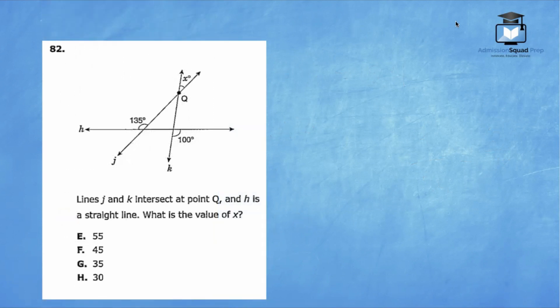For question number 82, you are being tested on angle relationships. Remember, the sum of the angles within a triangle must always add up to 180. Vertical angles are always equal, and any time you have a linear pair, meaning two angles that form a line, they will always be supplementary or add up to 180. Let's solve this problem.